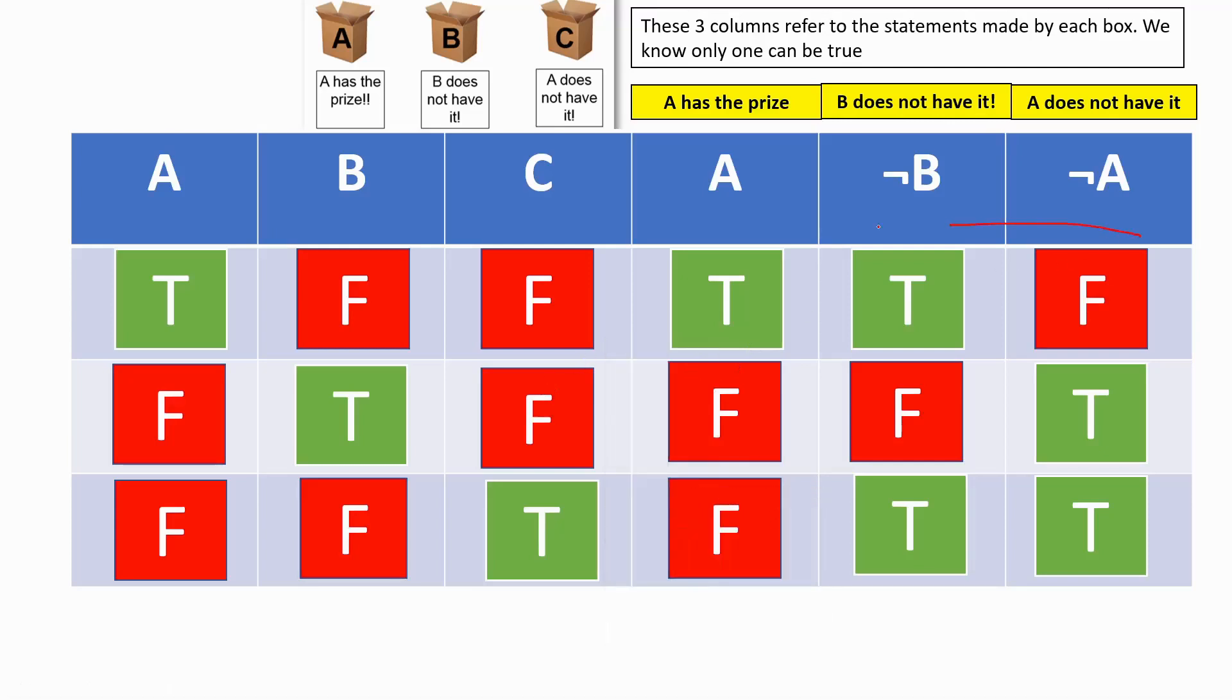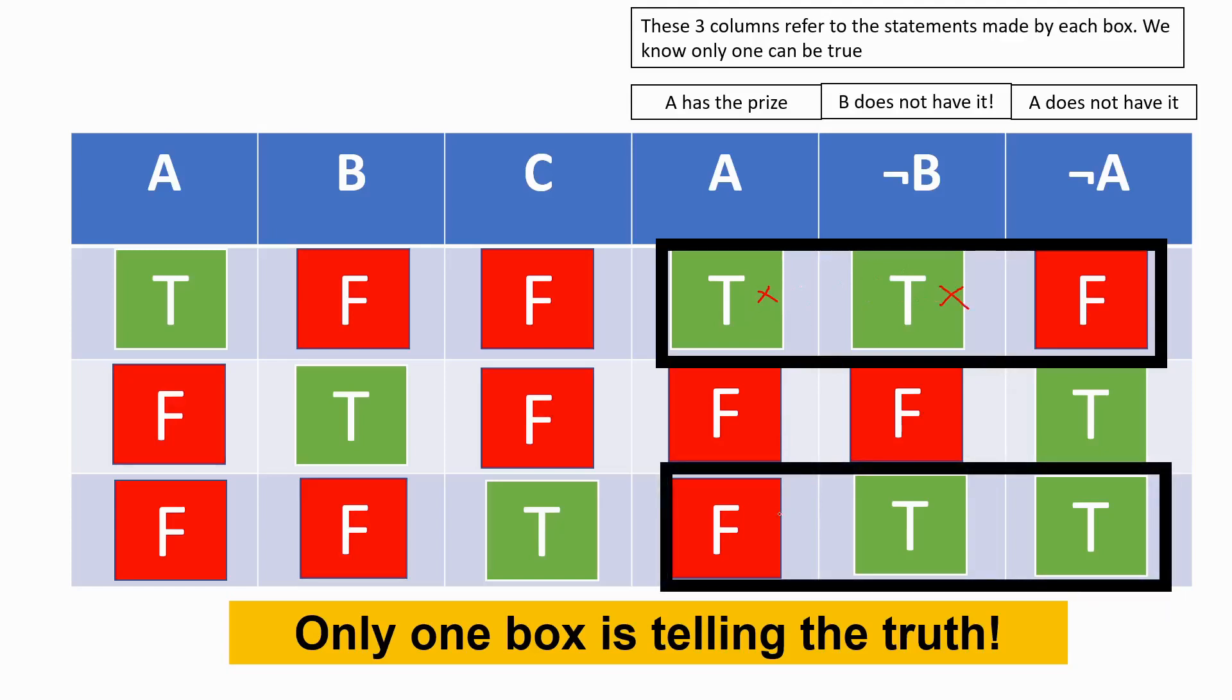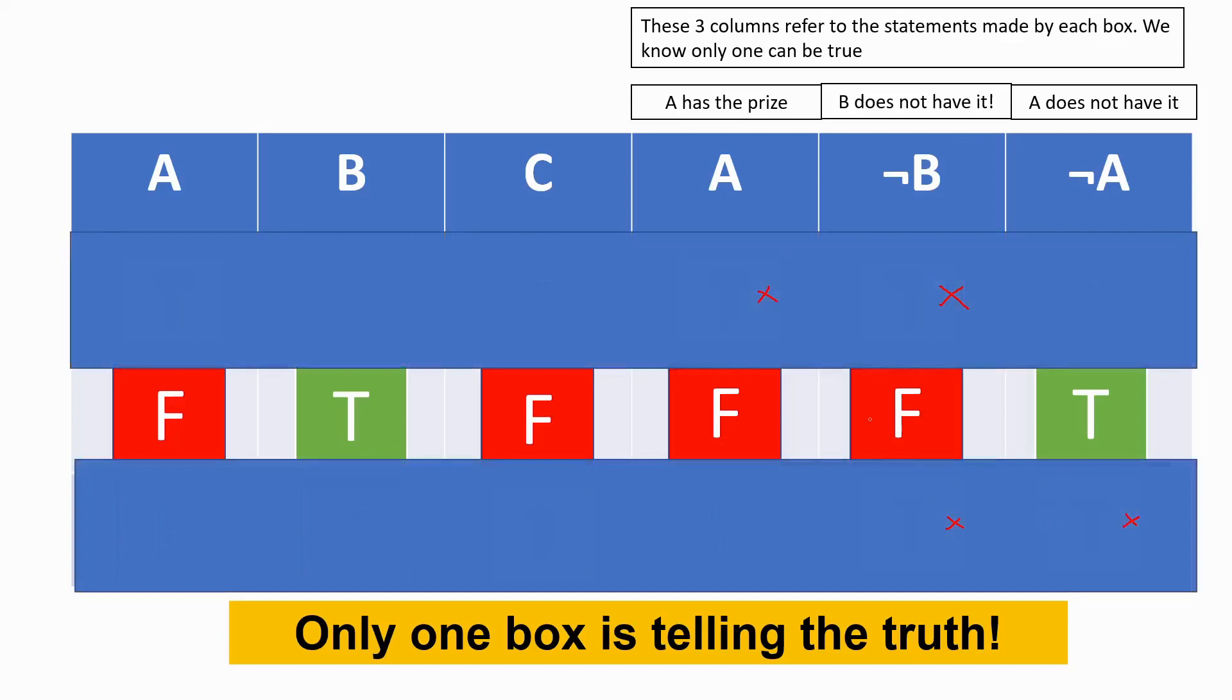Now if you look really closely at what we've just filled in, you'll notice that this is a TTF, FFT, FTT. And we know that only one box is telling the truth. Only one box can be telling the truth at any one given time. So it can't be that, because in this we have two boxes which are telling the truth. It can't be that one, because again we have two boxes which are marked as a T. So it has to be this combination here. This is really interesting. So immediately, for some of you, the penny is dropping - you're seeing that B has the prize in this combination, because this combination must be true.